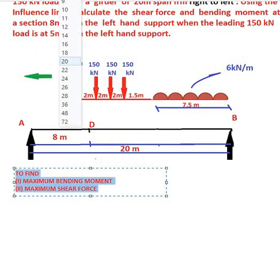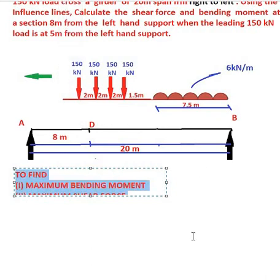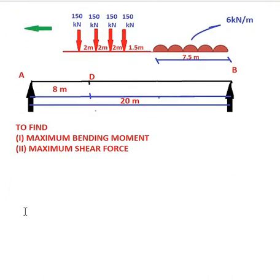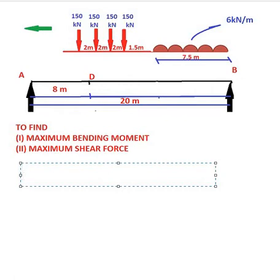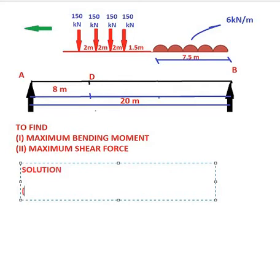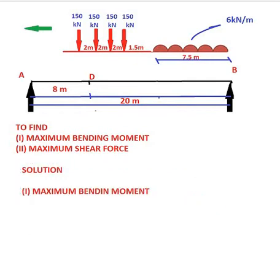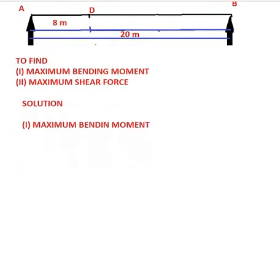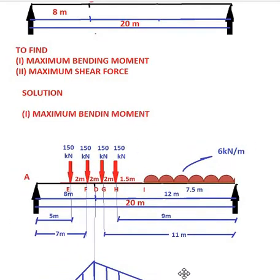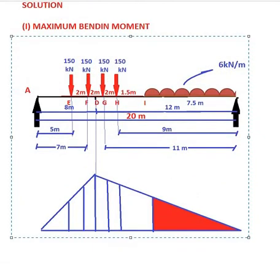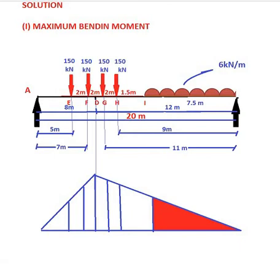First I am going to find the maximum bending moment. I have placed the load and drawn the influence line diagram. Here we can see the image of the influence line diagram for maximum bending moment. The length of the UDL is 7.5 meter, and the UDL is placed at 1.5 meter from the last 150 kilo Newton load. The leading load is the first 150 kilo Newton load, which is at 5 meter from the left hand support.